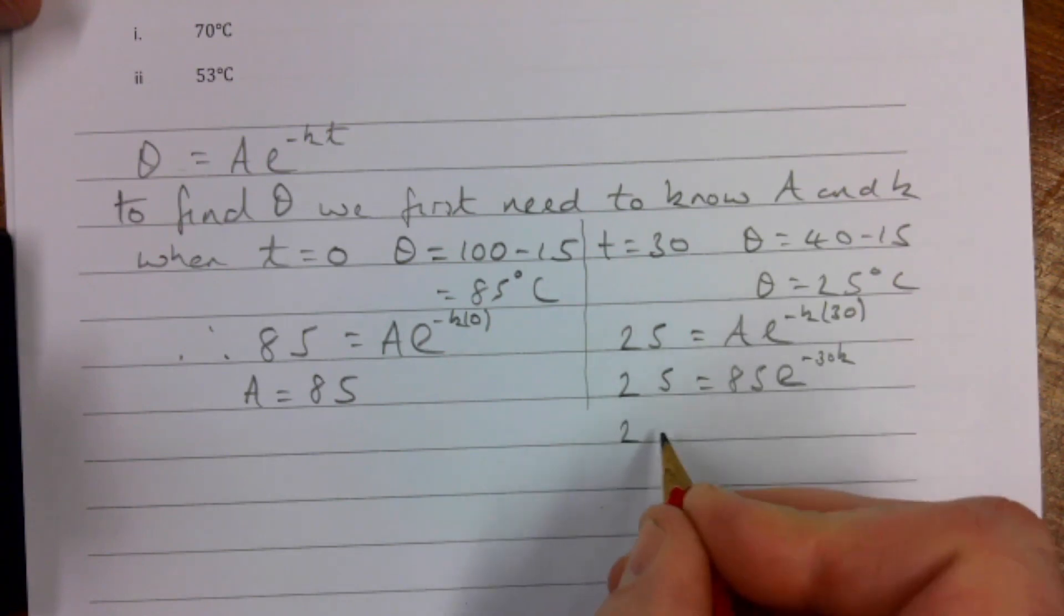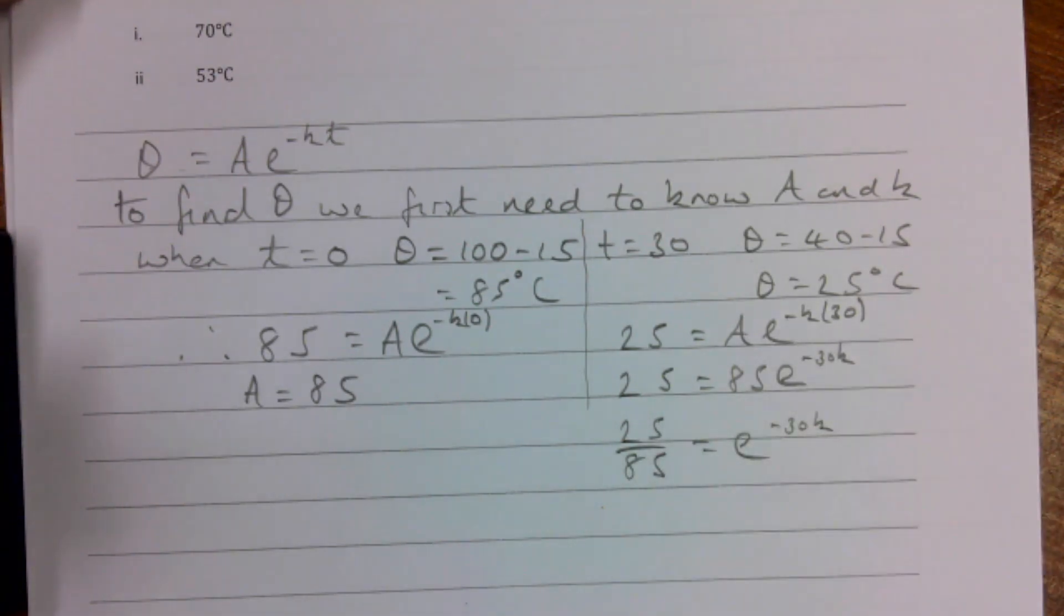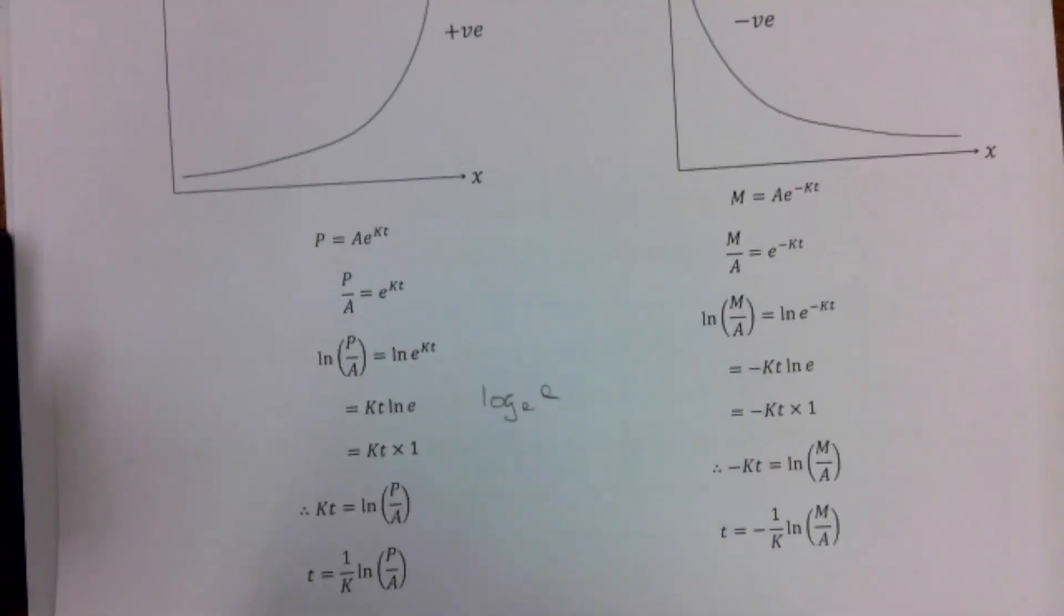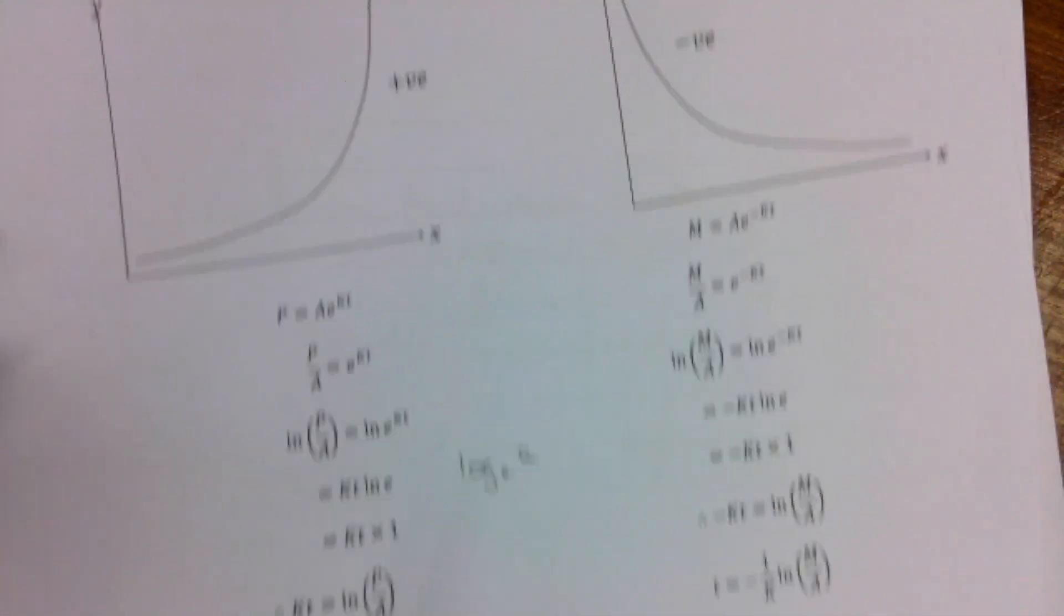I'm now going to divide my 25 by my 85 = e^(-30k). Now, do you see what I'm doing here? I'm effectively working my way through this only with actual numbers. This is what we kind of talked about earlier in the video.